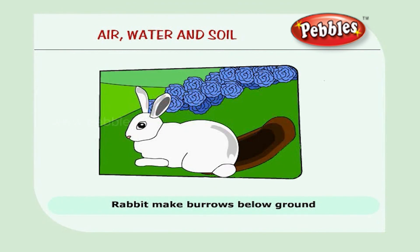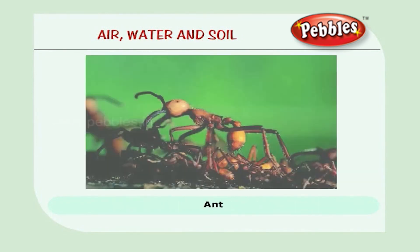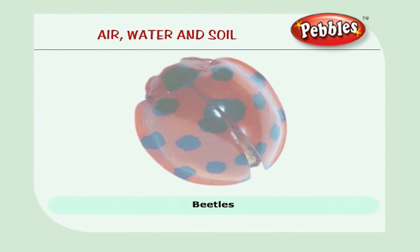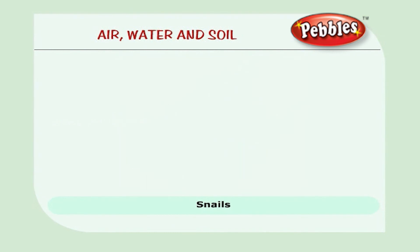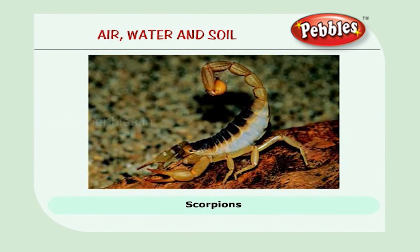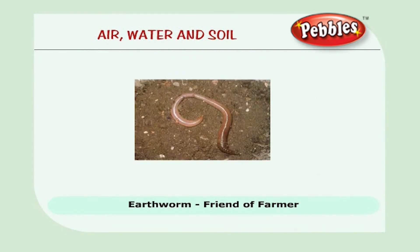Many animals live in the soil. Rabbits make their burrows below the ground. Ants, beetles, bugs, snails and scorpions live in the soil. Earthworms feed on decaying vegetable matter and enrich the soil, so they are called the friends of farmers.